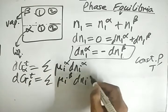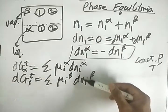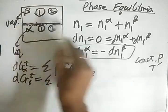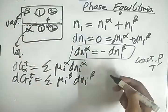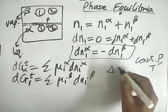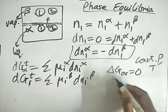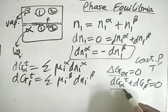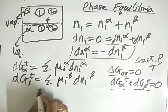For the beta phase we have mu-i-beta times dni-beta. Phase equilibrium means there is no more transport across the boundary — the system has reached equilibrium, the overall potential change is nullified, and the overall dGt equals zero. This means dGt-alpha plus dGt-beta equals zero, since the overall Gibbs energy is the sum of both phases.